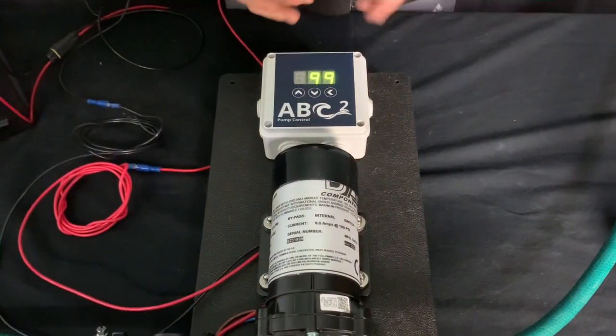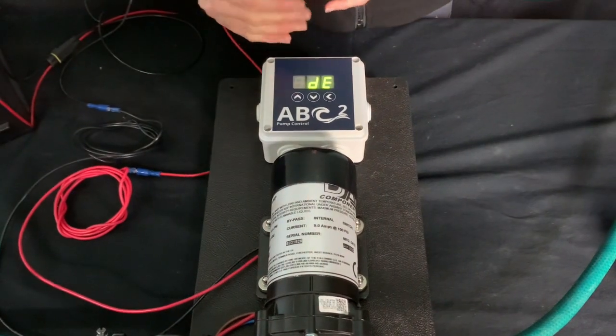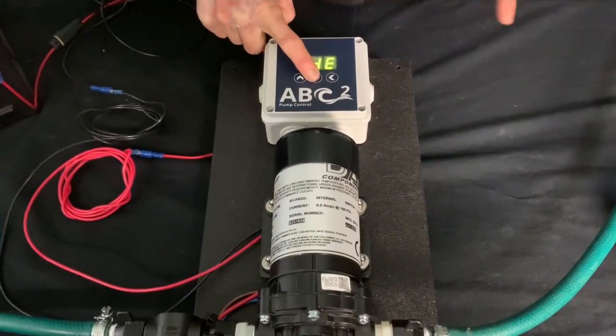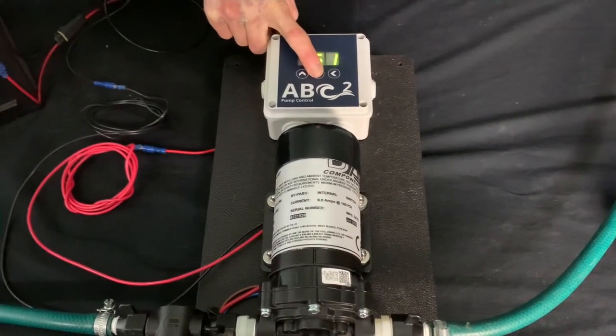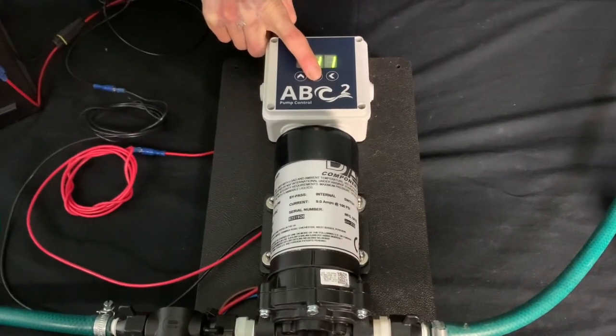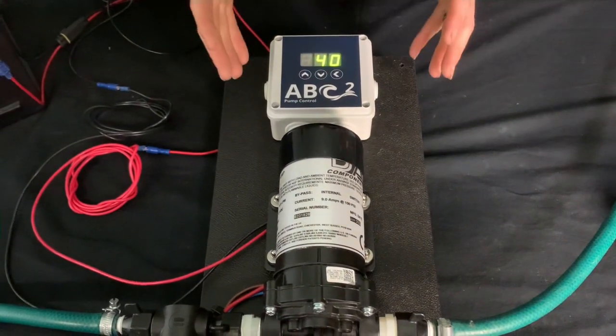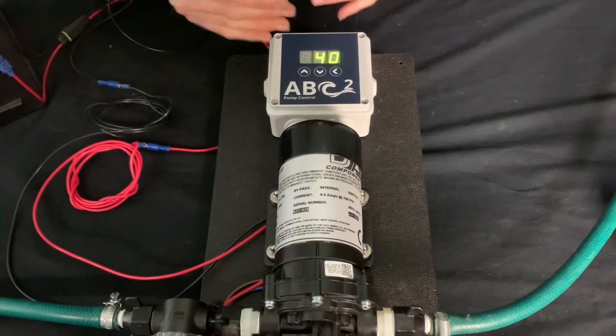So what we need to do is calibrate the controller to the pump. Good rule of thumb, most window cleaners have the flow rate at let's say 40. So now we need to calibrate this controller to this pump.